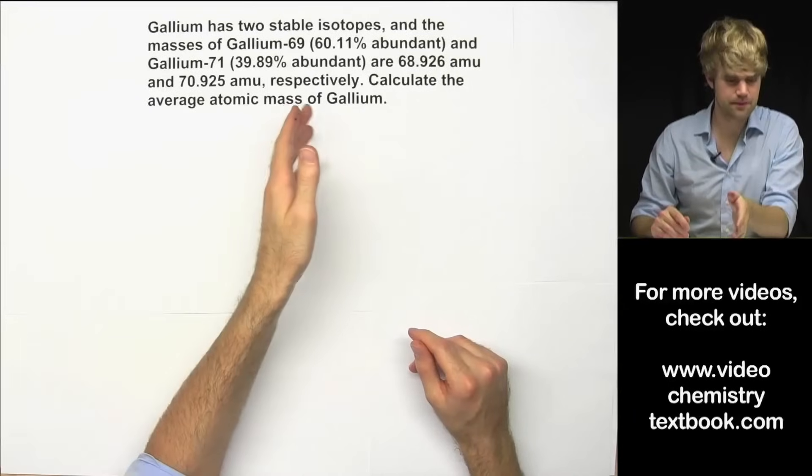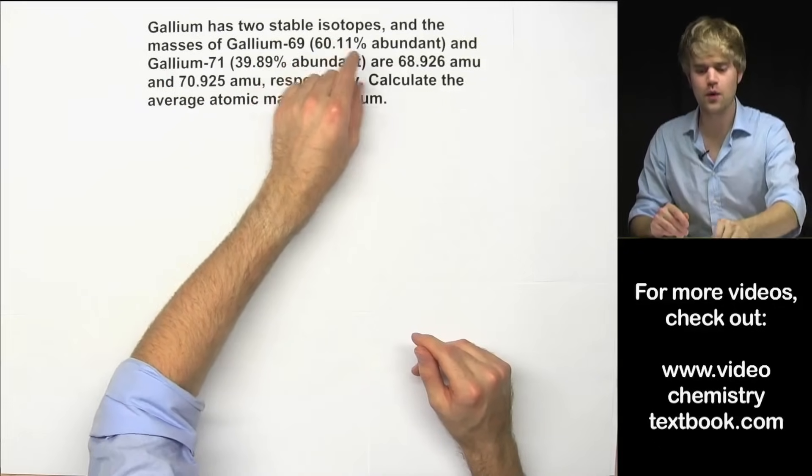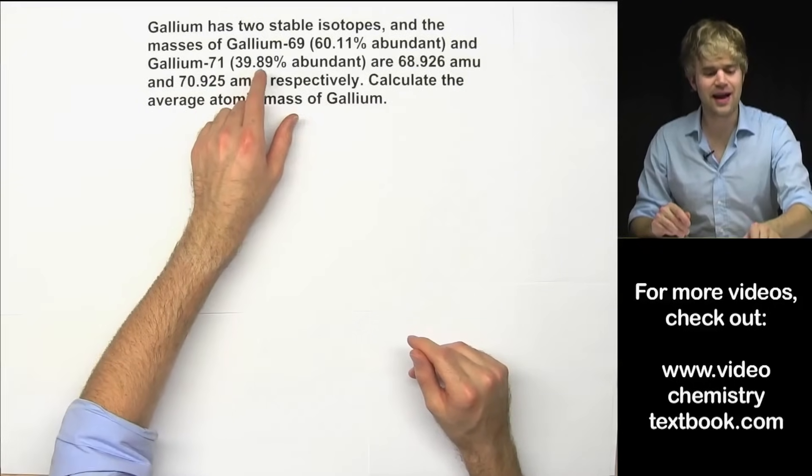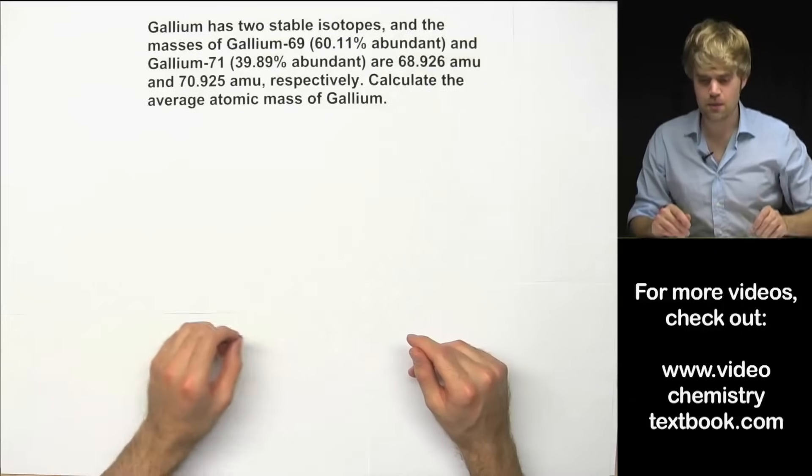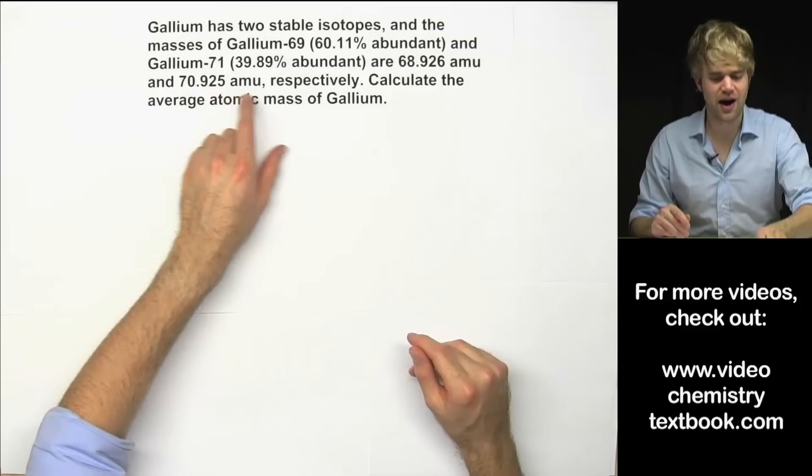Gallium has two stable isotopes and the masses of gallium-69 which is 60.11% abundant and gallium-71, 39.89% abundant, are 68.926 amu and 70.925 amu respectively.